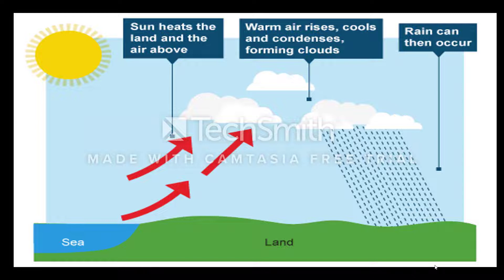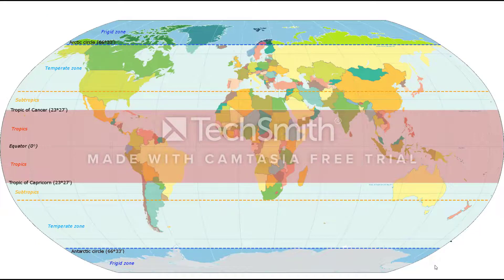As you can see in the picture, the sun heats the land and the air above. Warm air rises, cools, and condenses, forming clouds, and then rainfall occurs. For convectional rainfall, the ideal weather should be the summer season and the ideal location should be the equatorial region — the one highlighted in pink in the middle of the map.